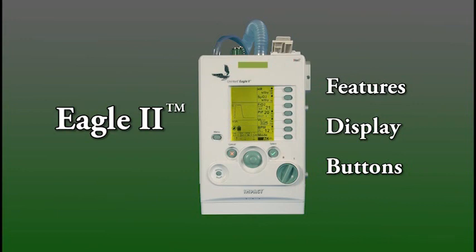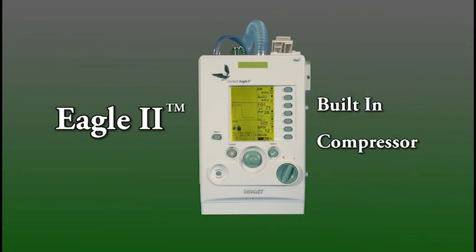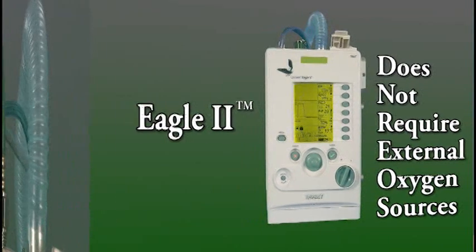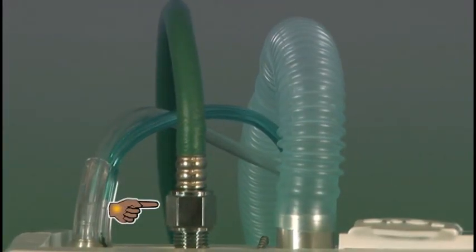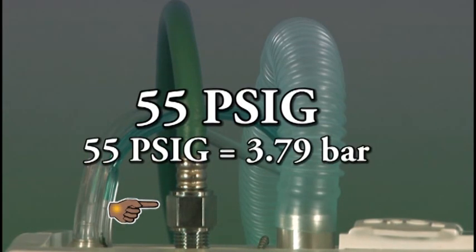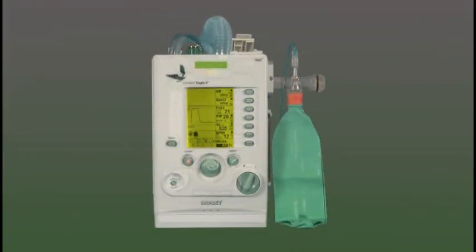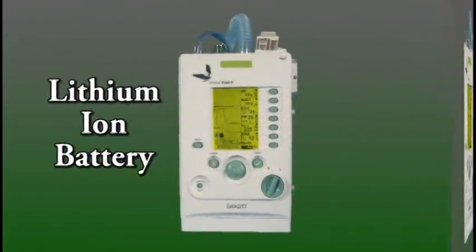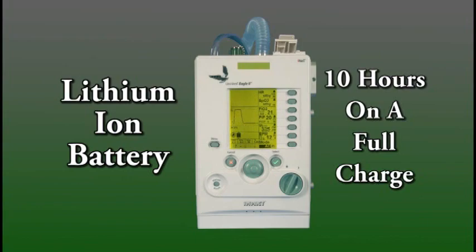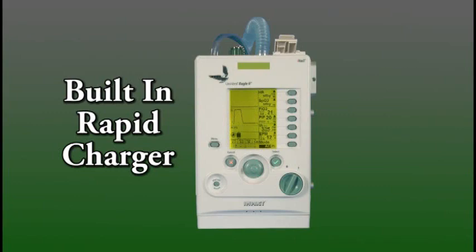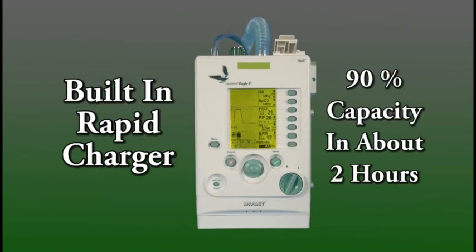The next item we will review is the device's features, display, and buttons. The Eagle 2 has a built-in compressor and air oxygen mixer; it does not require external oxygen sources. However, if needed, it will accept bottled or piped regulated oxygen at 55 PSIG, as well as low-pressure low-flow oxygen from an oxygen concentrator, chemical oxygen generator, or a liquid oxygen source. It comes equipped with a lithium-ion battery that lasts up to 10 hours on a full charge and a built-in rapid charger that can charge a drained battery to 90% capacity in about 2 hours.